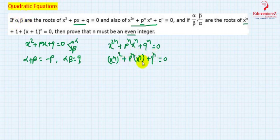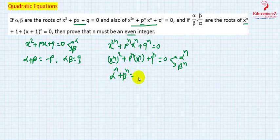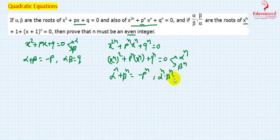From this quadratic, we can say: alpha to the power n plus beta to the power n equals minus p to the power n (sum of roots = minus b by a). And alpha to the power n times beta to the power n equals q to the power n (product of roots = c by a).